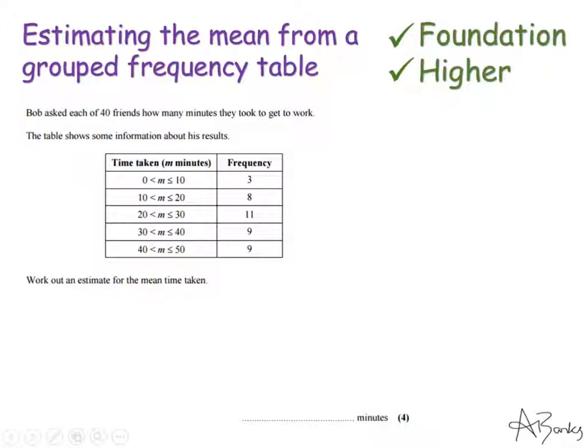Now we should know that when we calculate the mean what we actually find is we find the total and we divide by how many there are. In this question that's going to mean finding the total time taken for all of these people to get to work and then dividing by how many people there are.